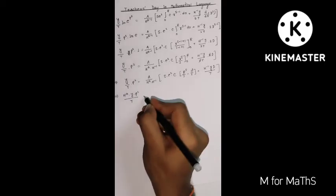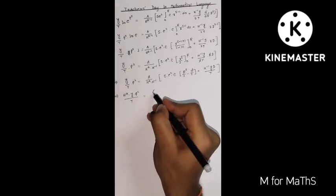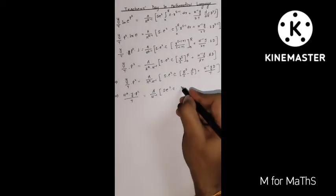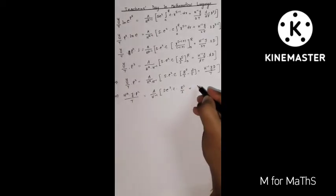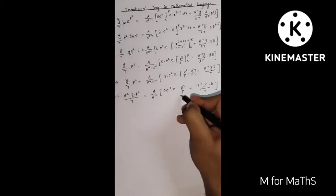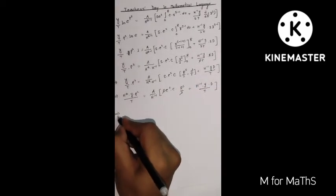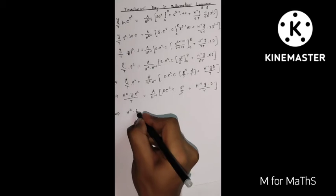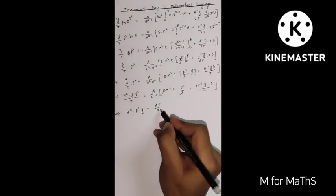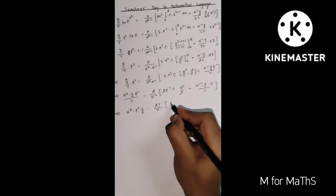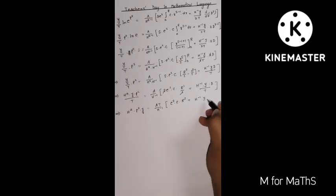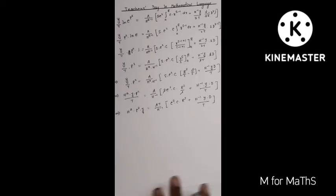We get: a by h-inverse, e-squared, c, R to the power s by s — that part is 0 so we neglect it — plus h-inverse times y times t by t. Here s and s cancel out. So we get h to the power s. Bringing things together: h to the power a times p-squared times y — multiplying t to the other side — gives a times t by h-inverse, e-squared, c, R to the power s, plus h-inverse times y times d by t.